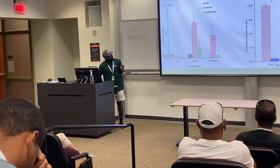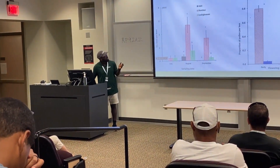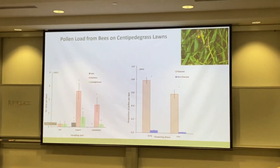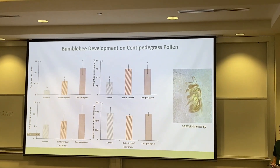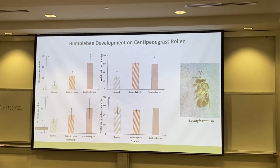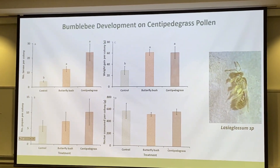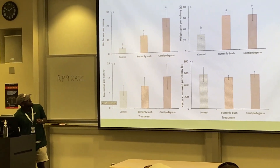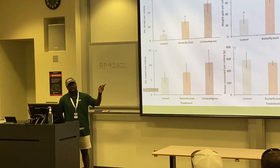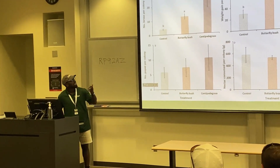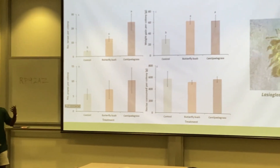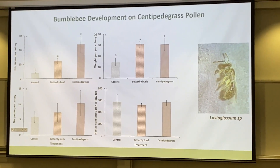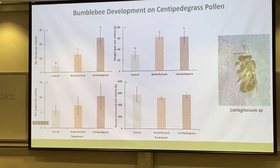Most of the bees were collecting pollen from the Poaceae, which includes centipede grass, compared to non-centipede grass sources. We then looked at whether centipede grass pollen could sustain bongo bee development in the lab, comparing it with butterfly bush, which is a known flowering plant resource. The number of larvae we found and the weight of the colony were comparable between the two.